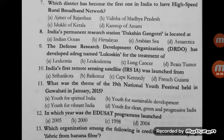Question number 9: the Defense Research and Development Organization (DRDO) has developed a drug named Leucosin for the treatment of — Leukemia, Leucoderma, Lung Cancer, or Brain Tumor? The correct option is Leucoderma, also known as Vitiligo. Leucosin is a herbal drug developed by scientists of the Defense Institute of Bio-Energy Research (DIBER), located at Haldwani in Uttarakhand.